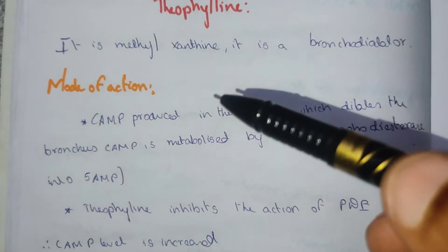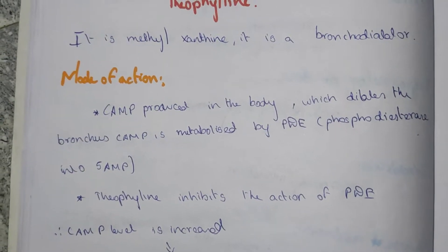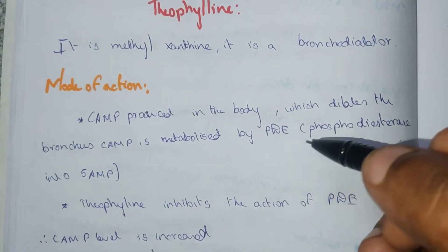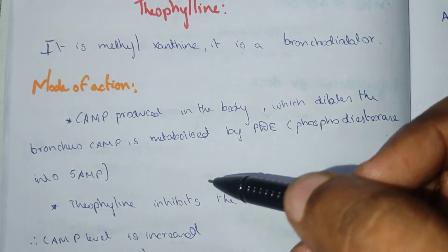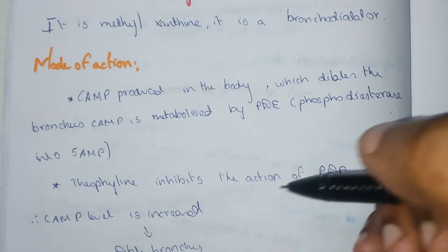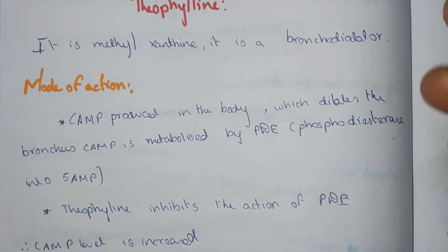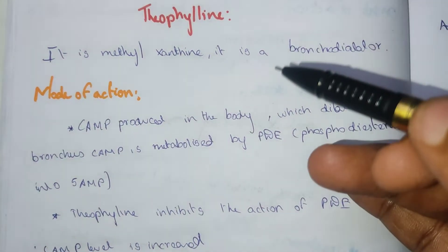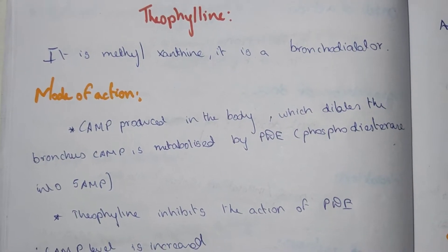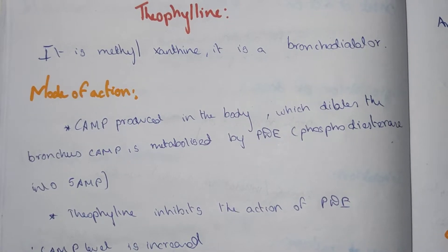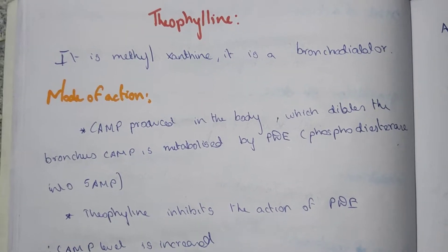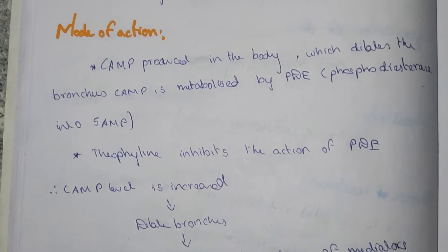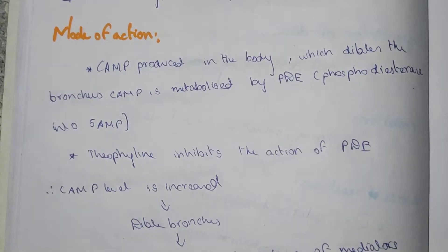Mode of action: cAMP is produced in the body which dilates the bronchus. This cAMP is metabolized by phosphodiesterase into 5'-AMP. In the previous video, I mentioned that ATP is changed into cAMP by adenyl cyclase — that is the normal action of salbutamol to dilate the bronchus.